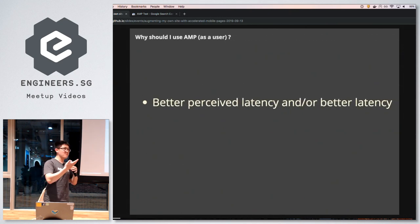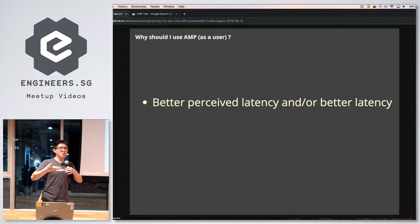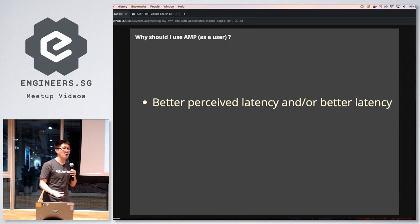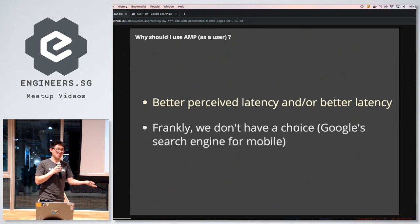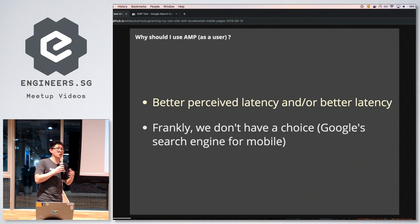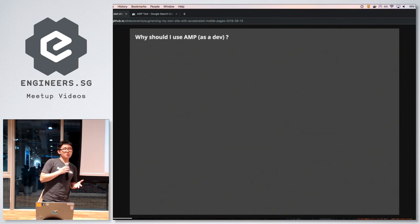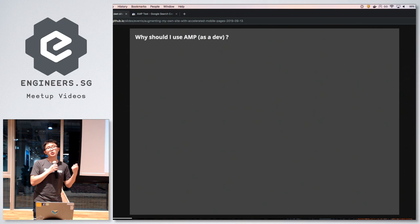For users, AMP provides better user experience and faster loading speeds, meaning better perceived latency overall. There's also a sad fact: if you're on a mobile phone using Google Search, you can't really choose — they're just going to give you the AMP results whether you like it or not.